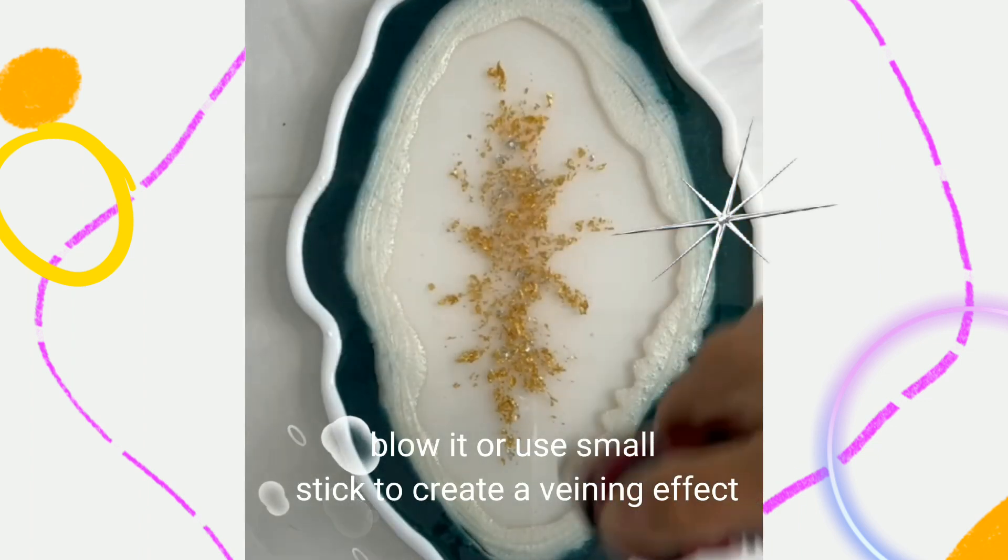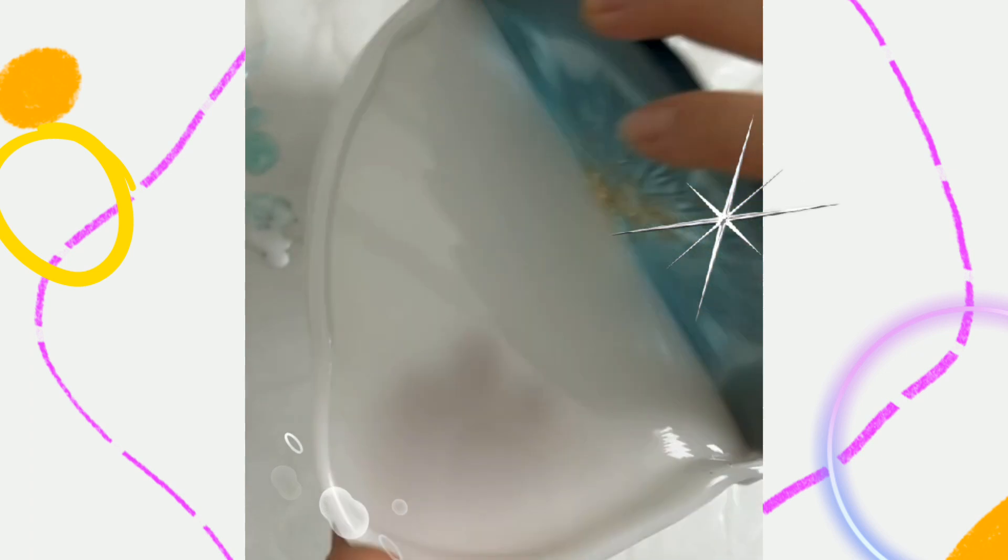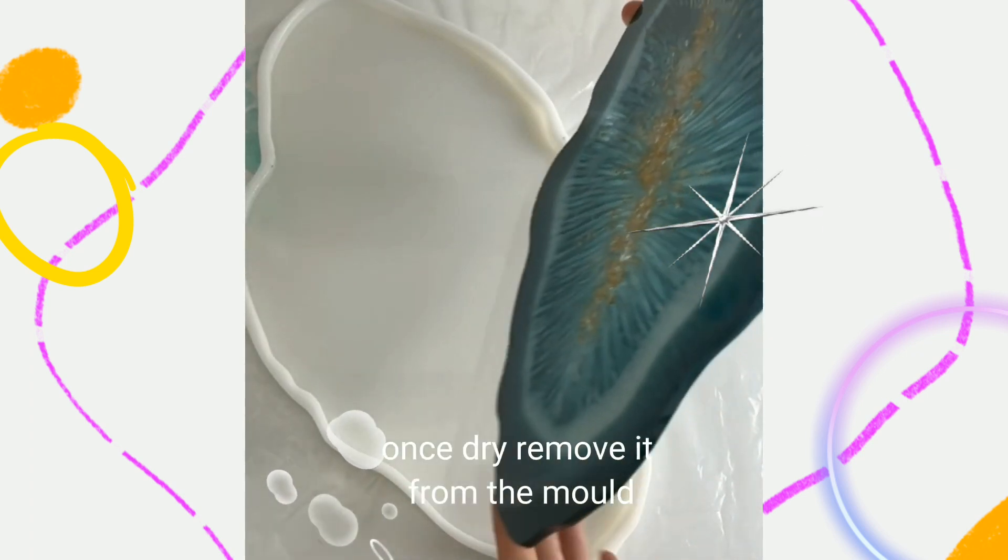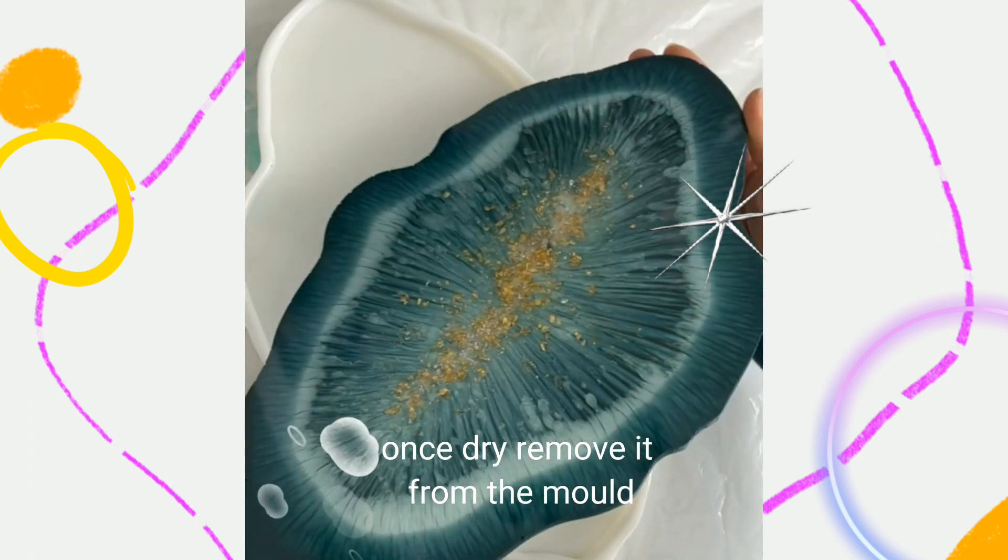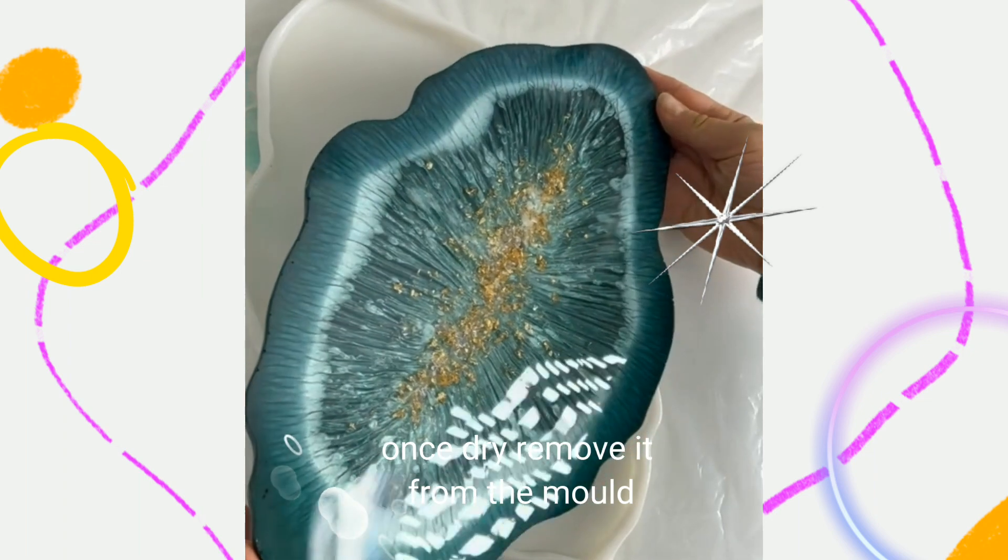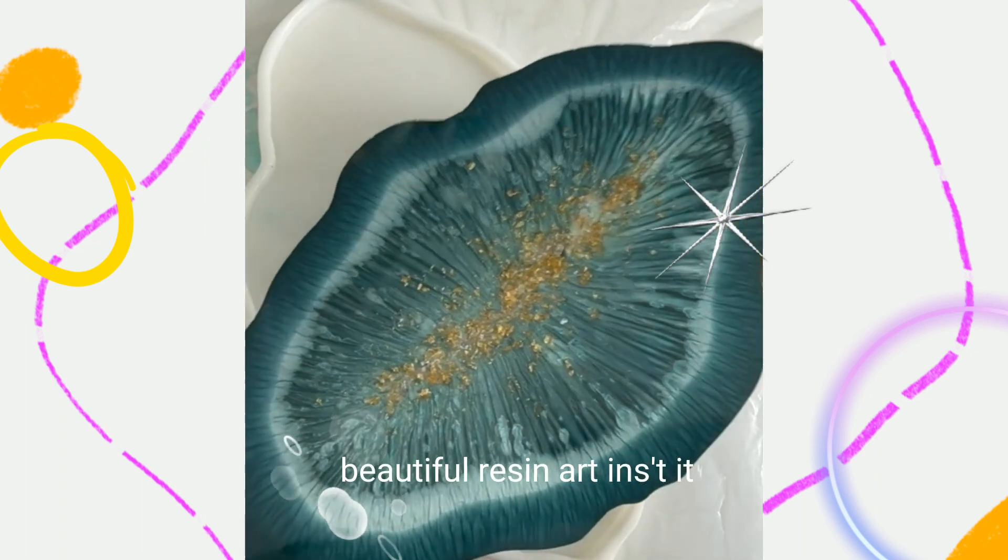Blow it or use small stick to create a veining effect. Once dry, remove it from the mold. Beautiful resin art instant.